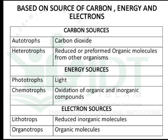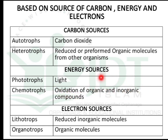Based on the source of carbon, energy, and electrons, microorganisms can be classified as autotrophs and heterotrophs based on carbon source. In autotrophs the carbon source is carbon dioxide, while heterotrophs use reduced or preformed organic molecules from other organisms. For energy sources, organisms are classified into phototrophs, which use light energy, and chemotrophs, which use oxidation of organic and inorganic compounds.